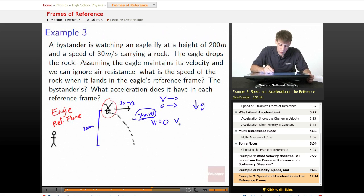The eagle lets go. We don't know what v-final is, that's what we're going to look for. We know what acceleration is. Acceleration is equal to g, which is equal to 9.8 meters per second per second. And finally, the distance is equal to 200 meters that it falls.